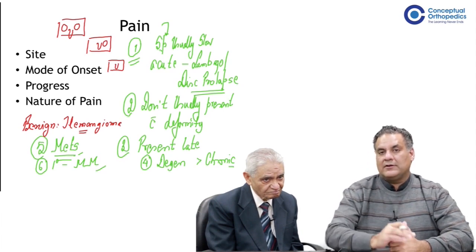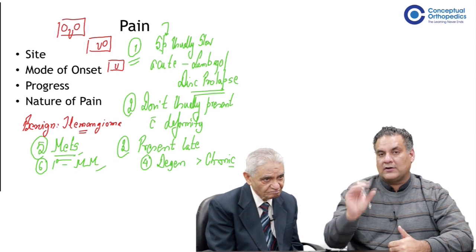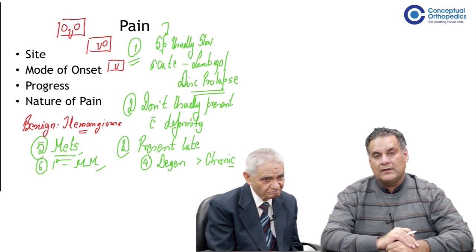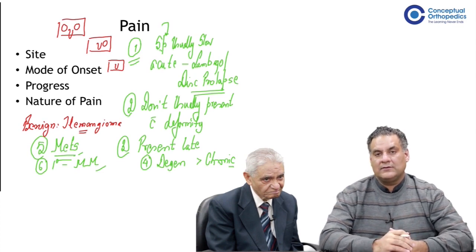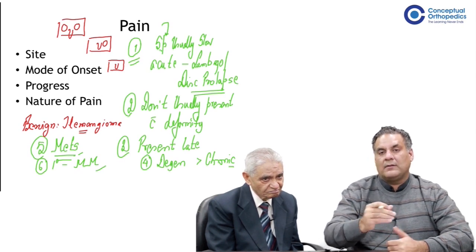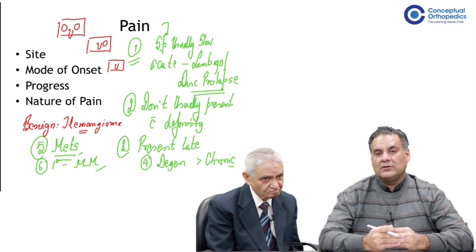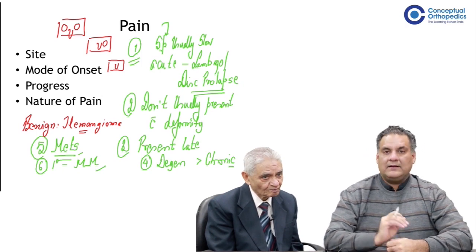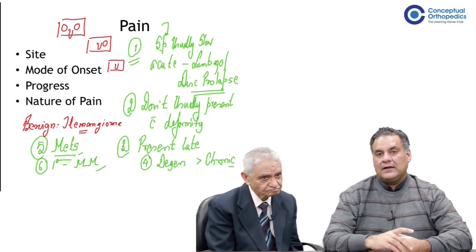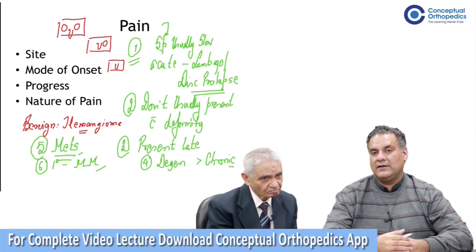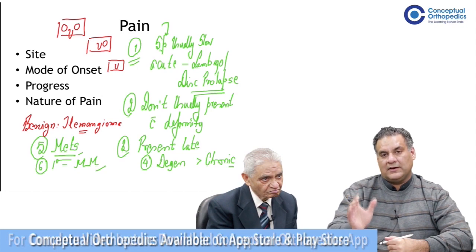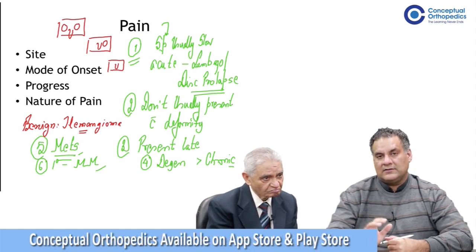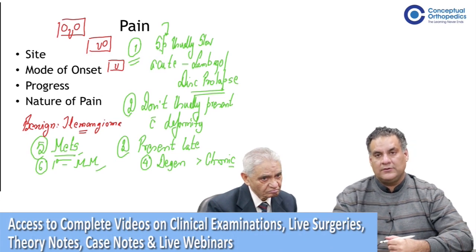Before MRI and CT scan, hemangiomas showed a polka dot sign on axial cuts. In today's world, because MRI is so commonly done, sometimes hemangiomas are not even specifically commented upon because they are not of significant proportion. Pain is one thing a patient presents with, and the first point is insidious onset and slow progression — usually in spine — except for lumbago or disc prolapse.